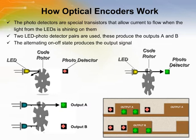The key components of an optical encoder are shown here. The shaft turns the code rotor. The LED emits infrared light. The photodetectors are special transistors that allow current to flow when the light from the LEDs is shining on them. The light from the LEDs is alternately blocked or allowed to pass to the photodetectors as the code rotor is turned. Two LED photodetector pairs are used, producing the outputs A and B. The alternating on-off state produces the output signal.